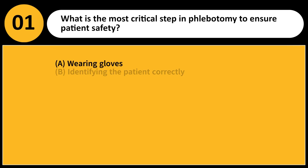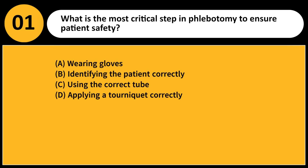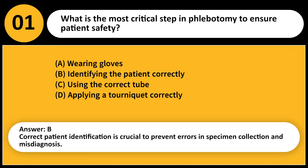What is the most critical step in phlebotomy to ensure patient safety? A. Wearing gloves. B. Identifying the patient correctly. C. Using the correct tube. D. Applying a tourniquet correctly. Answer: B. Correct patient identification is crucial to prevent errors in specimen collection and misdiagnosis.